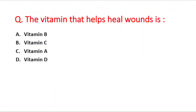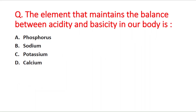Next question: the vitamin that helps heal wounds is — option A vitamin B, B vitamin C, C vitamin A, D vitamin D. The right answer is option B — vitamin C. Next question: the element that maintains the balance between acidity and basicity in our body is — option A phosphorus, B sodium, C potassium, D calcium. The right answer is option A — phosphorus.